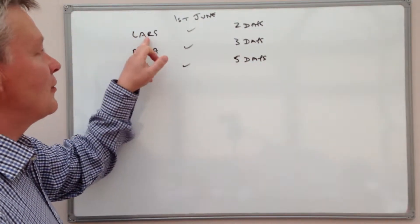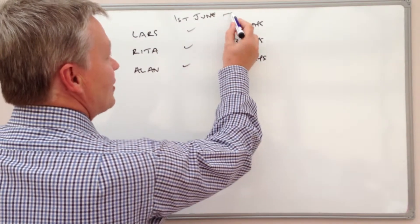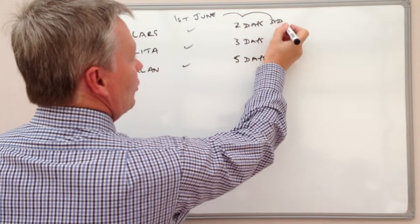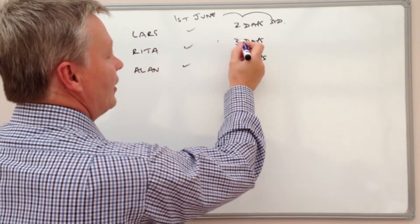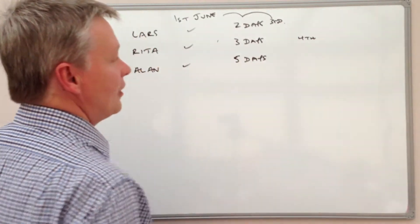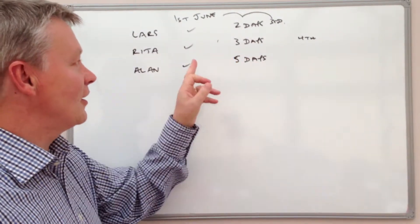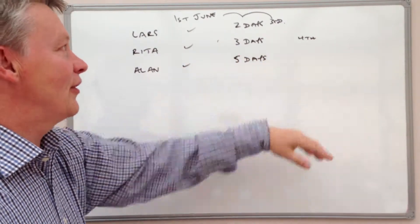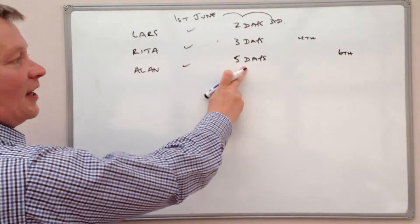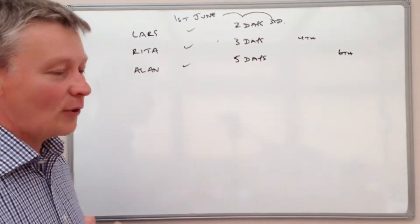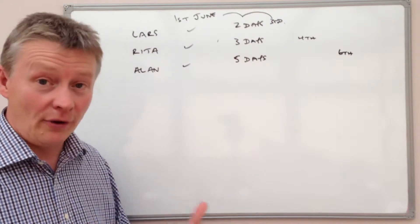If Lars goes on the 1st of June, the next time he goes will be two days later, so the next time he goes will be the 3rd of June. With Rita, the next time she goes will be three days later, so she's going to go next on the 4th of June. And Alan is going to go five days later, so he's next going to go swimming on the 6th of June. So the question deals with a series of word problems that are designed to use lowest common multiple.